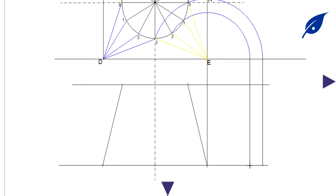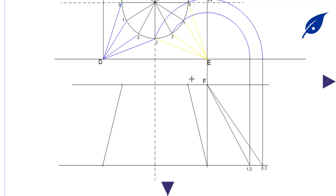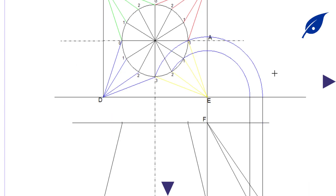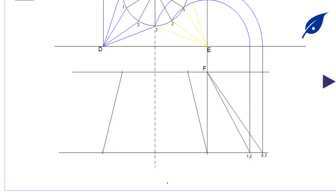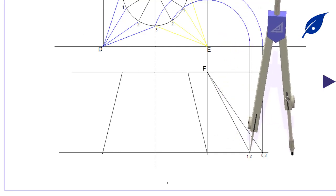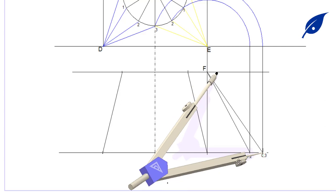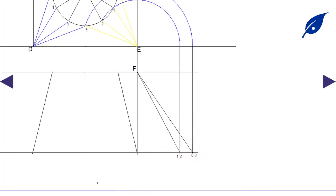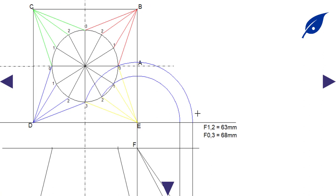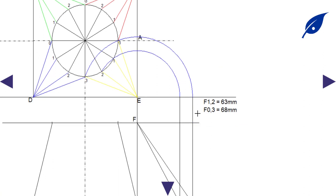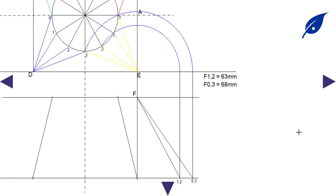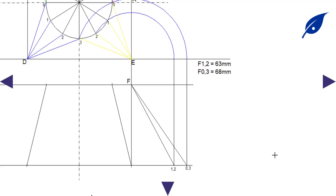Where the lines for 1 and 2 connect to point f, and where 0 and 3 connect to point f — the aim is to get the true length of the object when developing it. Since we'll be using these lengths repeatedly, we measure and note them: distance f1–f2 is 63 millimeters, and distance f0–f3 is 68 millimeters.